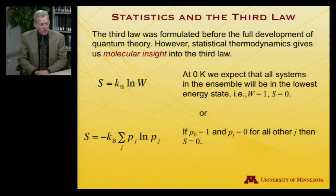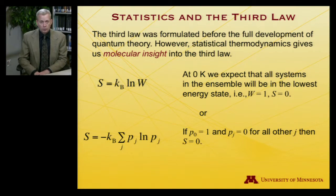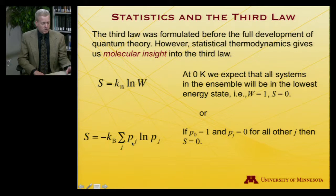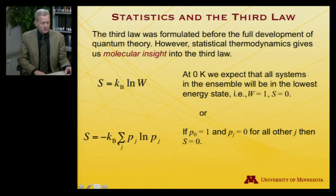There's another way of looking at that: the probabilistic expression for entropy, S equals minus k times the sum over all states of the probability of being in that state times the log of that probability. If everything is in one state — the ground state — then P0 equals 1 and Pj equals 0 for all other states. The ground state contributes 1 times log 1, which is 0. All other states contribute 0 times log 0, and by L'Hôpital's rule that is also 0. So again, this is consistent with Planck's hypothesis that entropy equals 0 at 0 Kelvin.